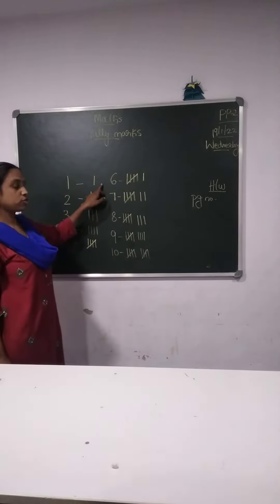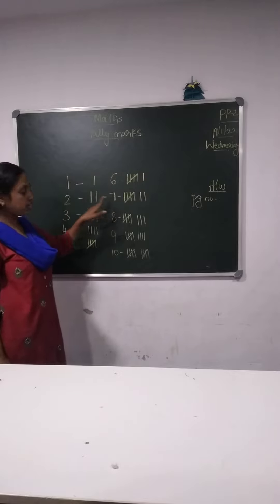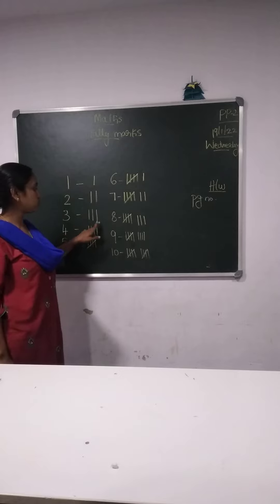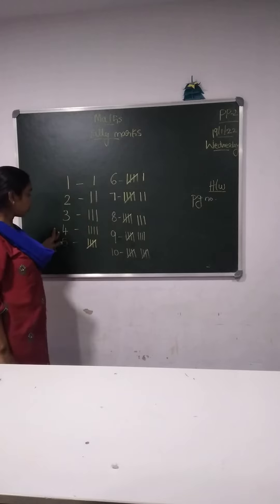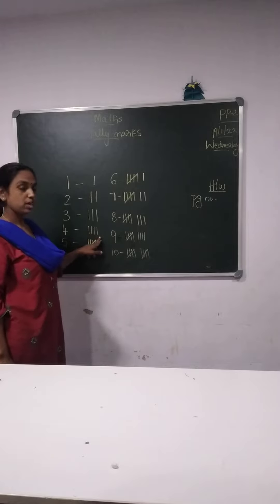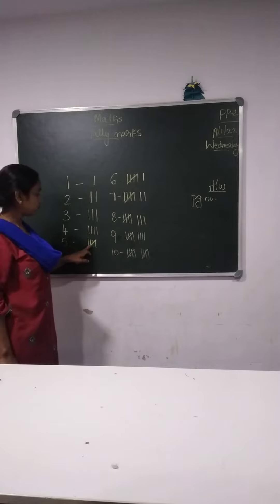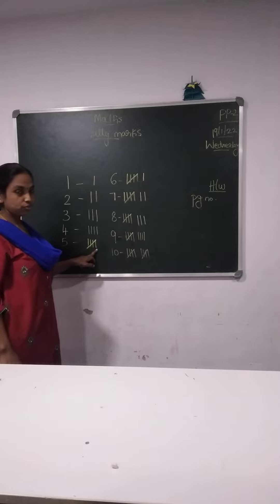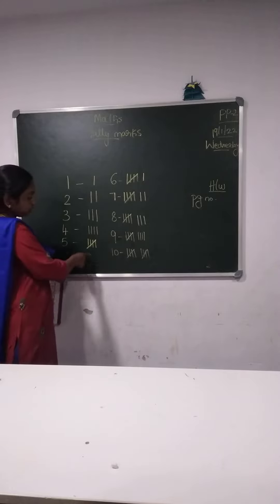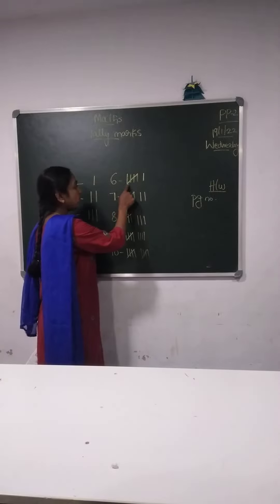For 1 we have to draw 1 line. For 2 we have to draw 1, 2 lines. For 3 we have to draw 1, 2, 3 lines. For 4 we have to draw 1, 2, 3, 4 lines. For 5 — 1, 2, 3, 4 lines and for 5 — 1 slash. That is 5. For 6 it is 1, 2.